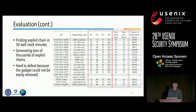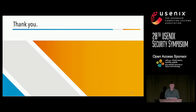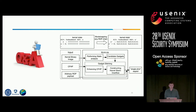The exploit chains generated are hard to defeat because the function gadgets used by Kepler cannot easily be removed from the kernel. In summary, we proposed a single-shot exploitation technique that is effective and generic. We implemented Kepler to facilitate identification of single-shot exploitation and open-sourced the tool. CFI solutions with low overhead should be considered and widely deployed for major releases of Linux kernels. Thank you for your attention — I'm ready for questions.